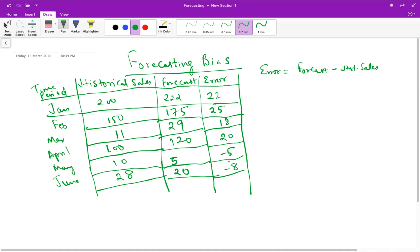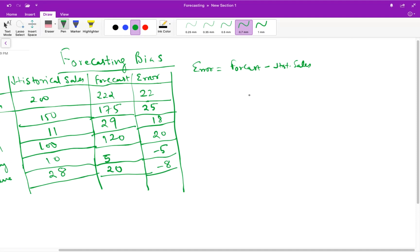If I draw a graph of the error values, a line chart. This is my 0. The first value is 22. Let me say this is the first value, 22. Second value is 25. Third value is 18. Fourth value is 20. Fifth value is minus 5 and the last value is minus 8.